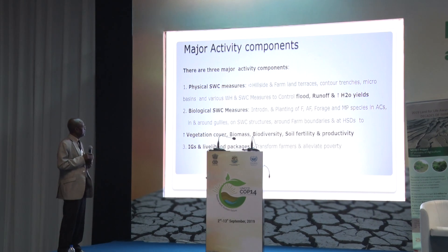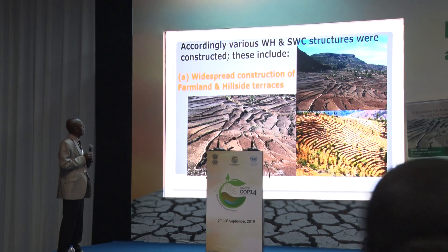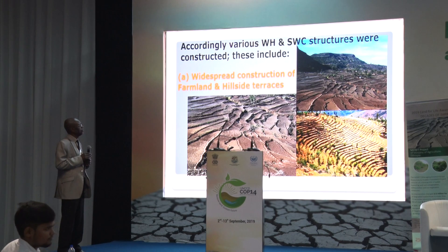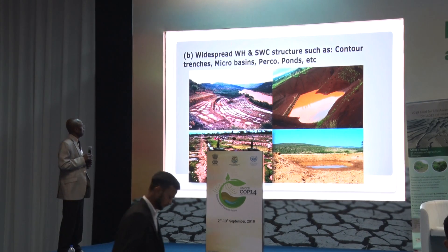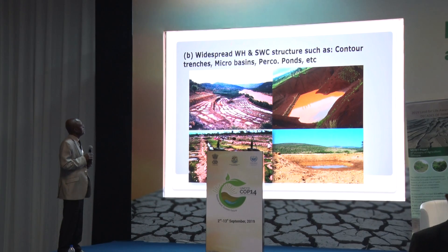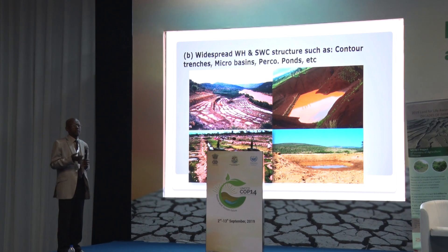The other component is income generation and livelihood packages integrated into the land rehabilitation program, intended to transform the livelihood of beneficiary farmers and alleviate poverty. The project implemented various water harvesting and soil conservation measures, including construction of farmland and hillside terraces to control erosion and restore productivity. It also includes construction of check dams, micro-basins, and percolation bonds to control erosion, increase water infiltration and moisture conditions, and increase water availability in the catchment for small-scale irrigation and domestic purposes.